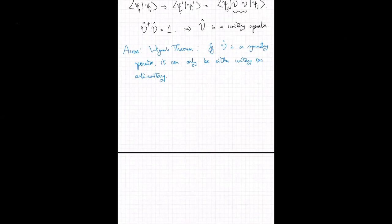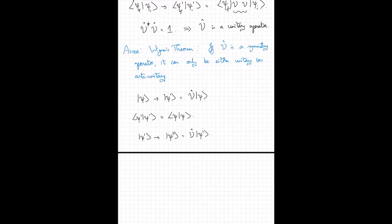A student asks: if we apply the symmetry operator two or three times, does the probability amplitude still not change? Yes — because they are all connected to the same symmetry transformation. If ψ → ψ′ = Uψ, then ⟨ψ′|ψ′⟩ = ⟨ψ|ψ⟩. Going from ψ′ to ψ″ = Uψ′, by the same reasoning ⟨ψ″|ψ″⟩ = ⟨ψ′|ψ′⟩ = ⟨ψ|ψ⟩. So you can keep doing this indefinitely and all amplitudes remain the same.